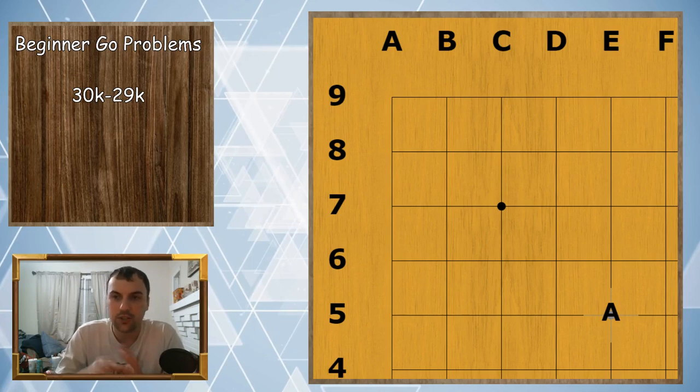This playlist is targeted at 30K and 29K. 30K being someone who just learned the rules and is about to start playing Go, maybe they've played a couple of games. 29K is for those starting to see captures, understanding how capturing works, trying to count liberties. You kind of know the rules and have played a couple games but you're still learning the basics.